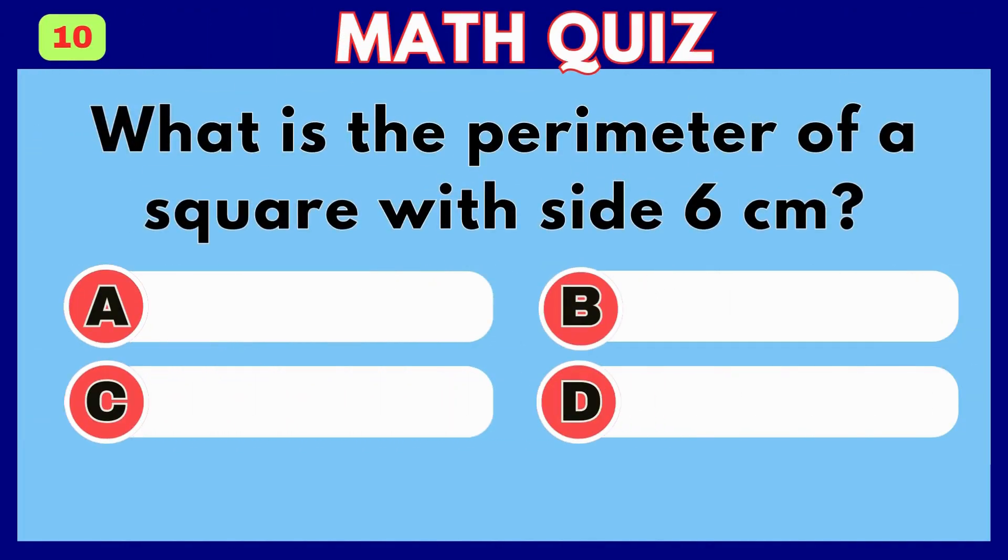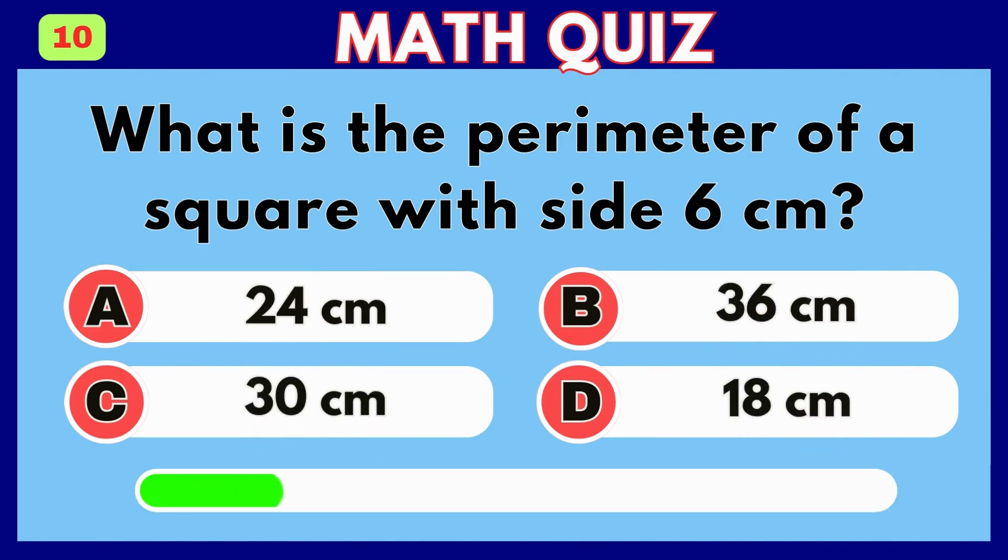What is the perimeter of a square with sides 6 centimeters? Answer A, 24 centimeters.